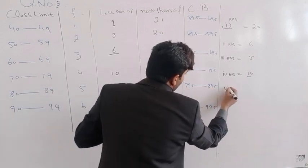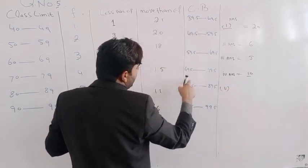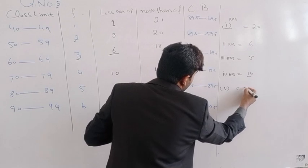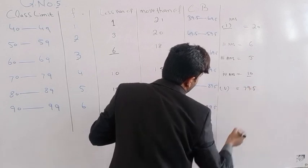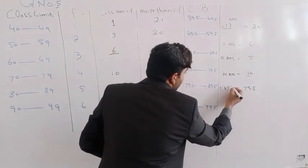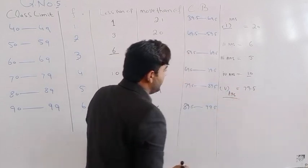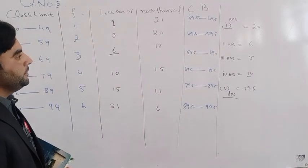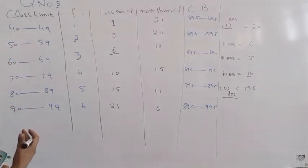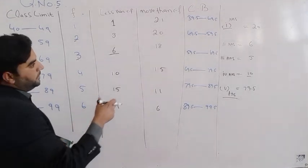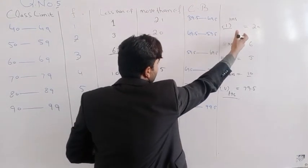Question number 5: the lower class boundary is 79.5. If the student got 50, the lower class boundary is 50.